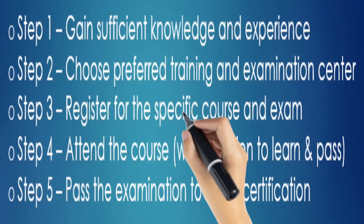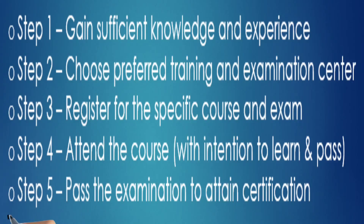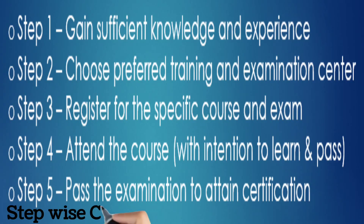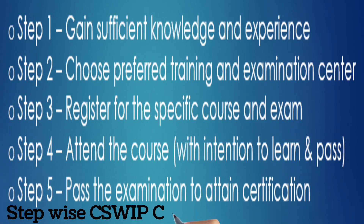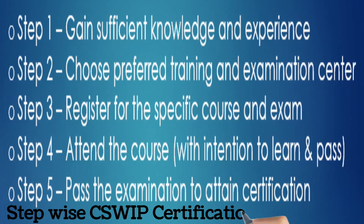In order to attain CSWIP certification, the following steps should be thoroughly followed. Step 1 is to gain sufficient knowledge and experience in welding metallurgy, welding-related terms and welding inspections. Step 2 is to choose a preferred training and examination center at the most convenient location. Step 3 is to register for the specific course and examination. Step 4 is to attend the course with the intention to learn and pass. Step 5 is to pass the examination to attain certification and use the title of Certified Welding Inspector.